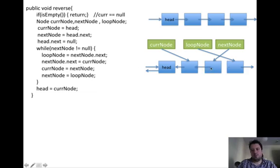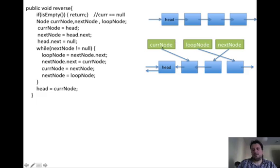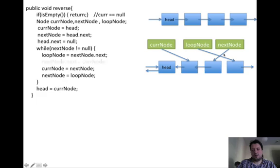We just have to continue pointing the next node element to the current element. Then because the next node is pointing to the correct element in the linked list, we have to move current node to point to the next node.